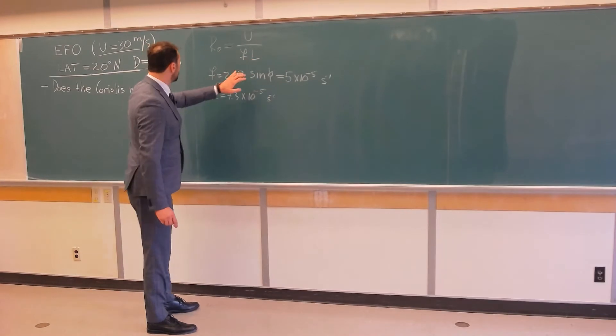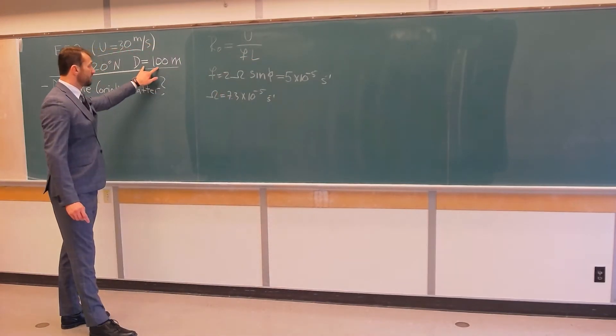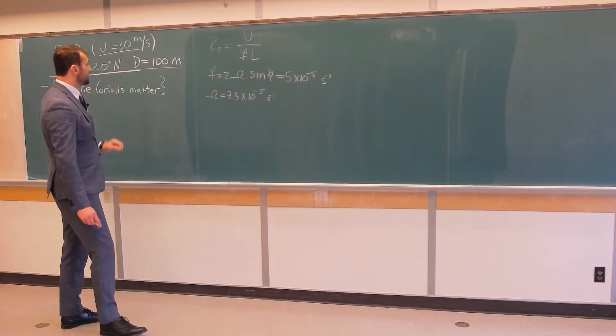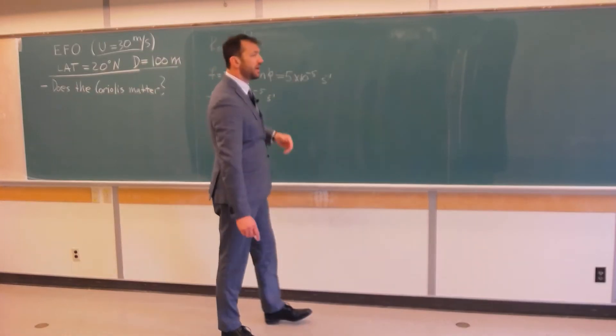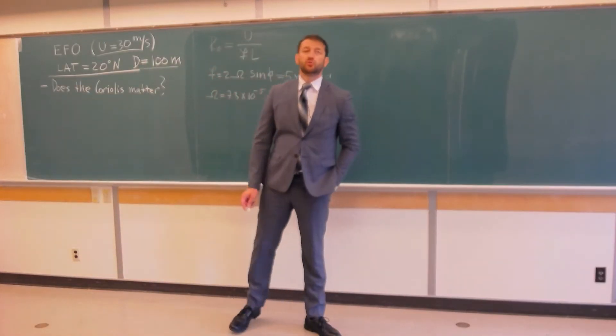Characteristic length of this tornado is diameter, 100 meters, and characteristic velocity is 30 meters per second. So, before we plug in numbers, what do we need to know?